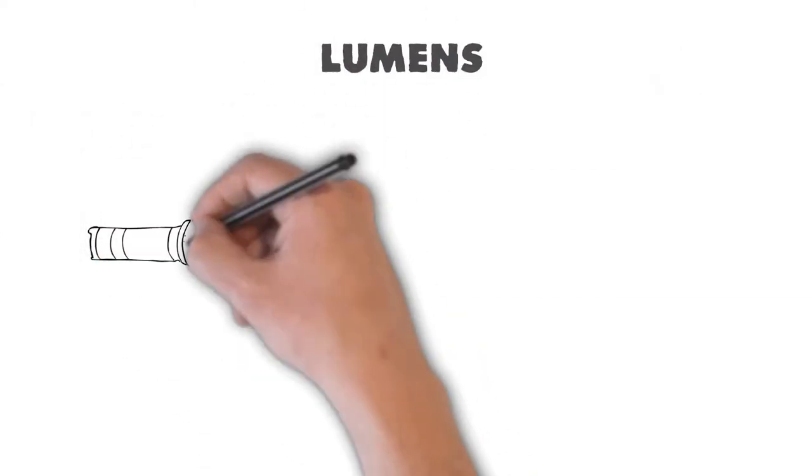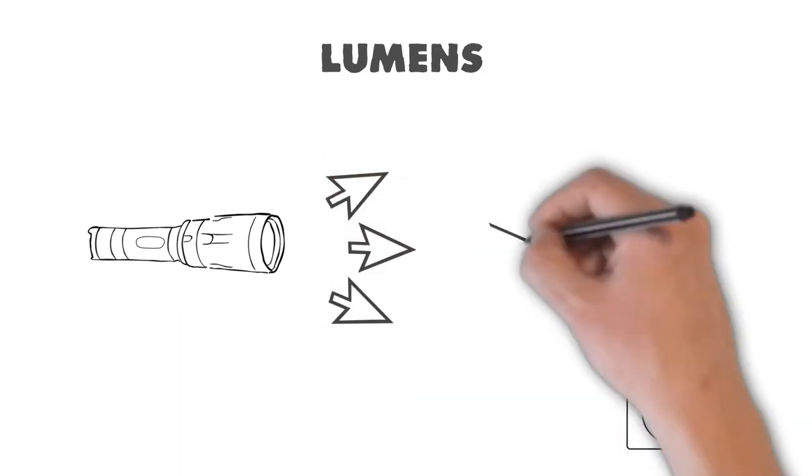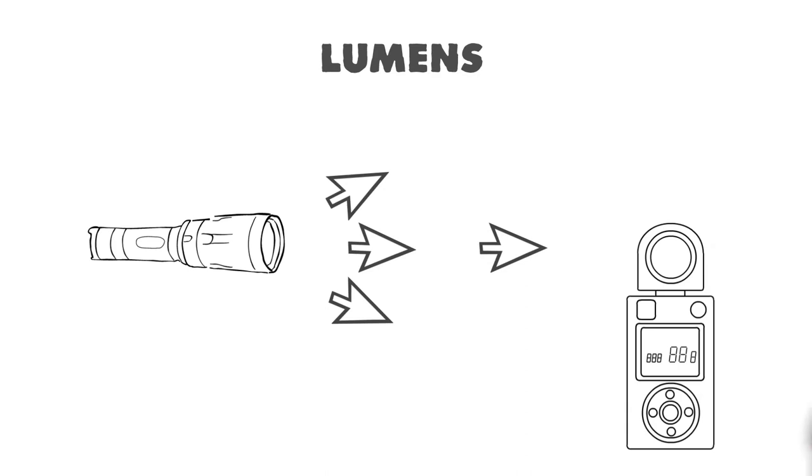We measure output in lumens. It's a whole science of measuring the light in different ways and at different distances, but at the end of the day, it's the amount of light coming out.